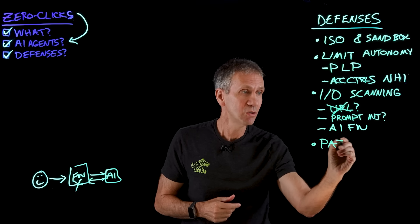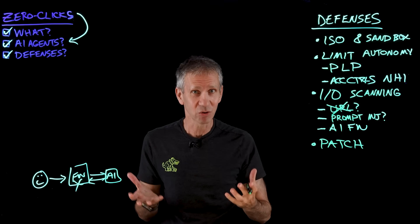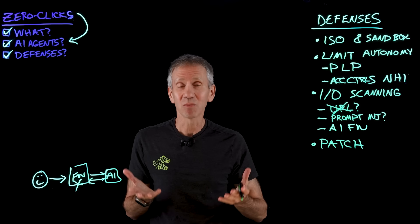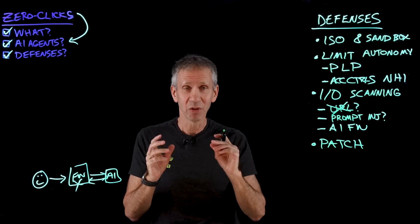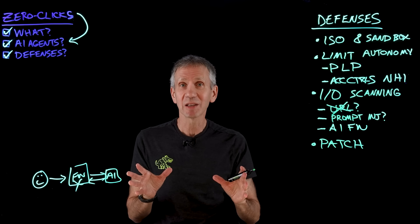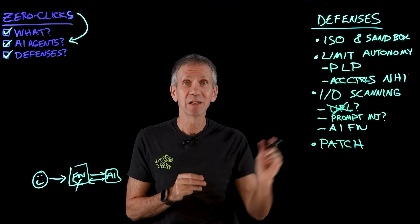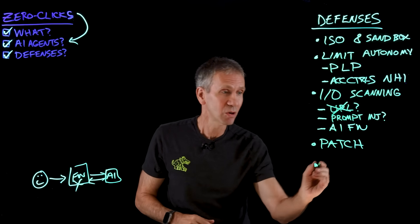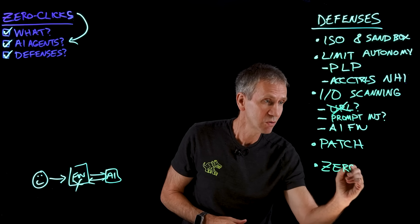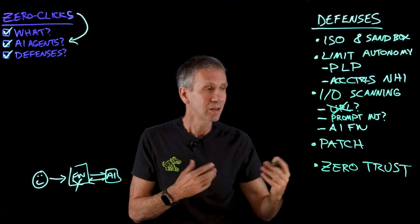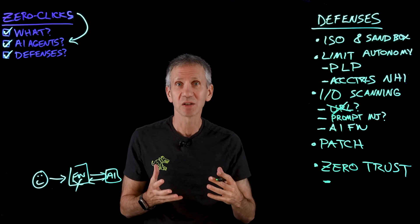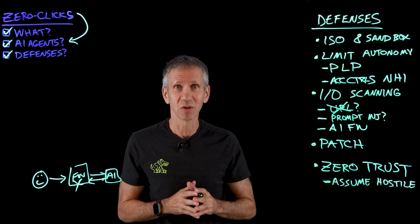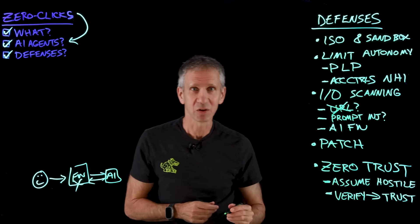Zero-click attacks have historically existed because of software vulnerabilities. You didn't write the code, but the best you can do is keep your software up to date. When vendors patch a vulnerability, get that applied to your system so you're no longer exposed. And since we're talking about zero clicks, we need zero trust — assume that everything coming into your system is hostile. Don't assume the best; assume the worst and hope for the best. Always verify first, then trust.